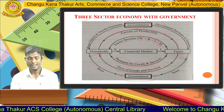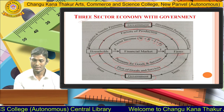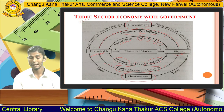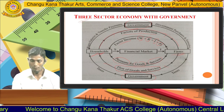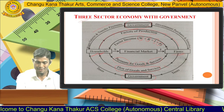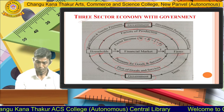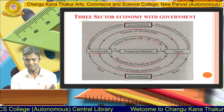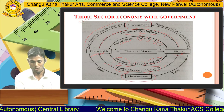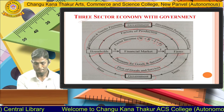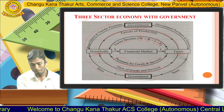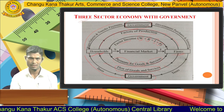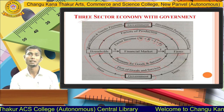Now with the third player — the government — added to the economy, let us look at the interaction between government and households. Households pay taxes to the government. These consist of direct tax, for example income tax, and indirect tax.